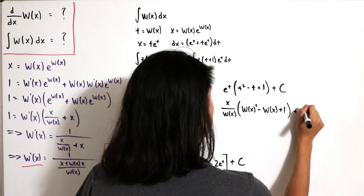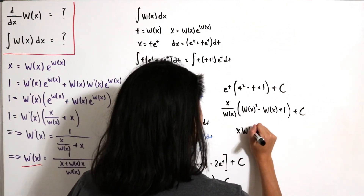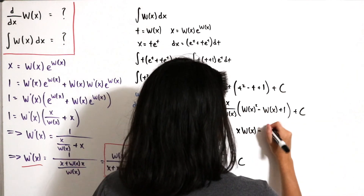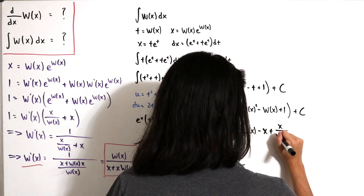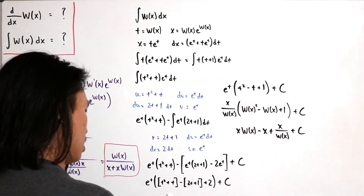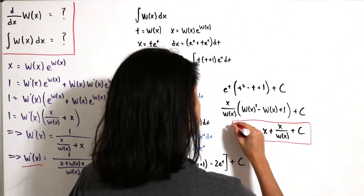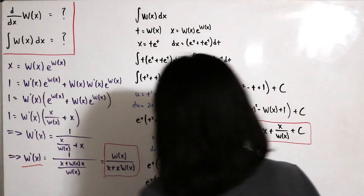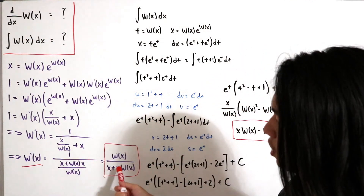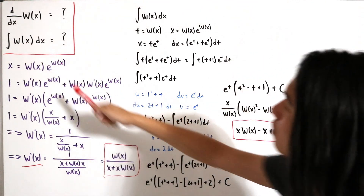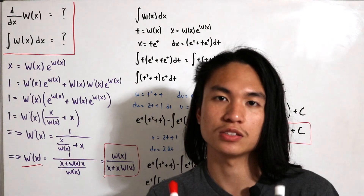Therefore, the indefinite integral of W(x) dx equals x·W(x) − x + x/W(x) + C. To summarize: the derivative of W(x) is W(x)/[x·(1 + W(x))], and the indefinite integral of W(x) dx is x·W(x) − x + x/W(x) + C. Pretty cool!